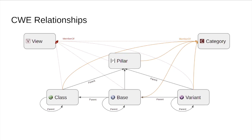The information hierarchy of CWEs works like this: a pillar can directly contain classes, bases, and variants. The idea was pillars contain classes of weakness types, classes contain base weakness types, and base weakness types have language- and technology-specific variants — but all of them can be parents of or directly contain the others. Views and categories are similar but presented differently on the website; both can contain all the other types.